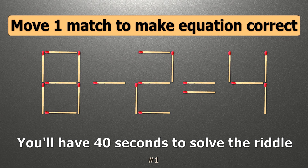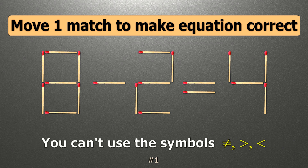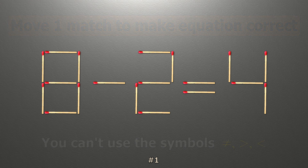We have the equality 8 minus 2 equals 4. Our equality is wrong. We need to move one match to make our equality correct.